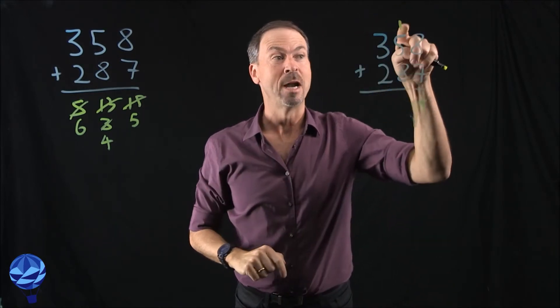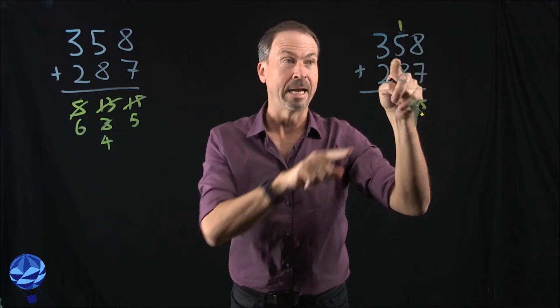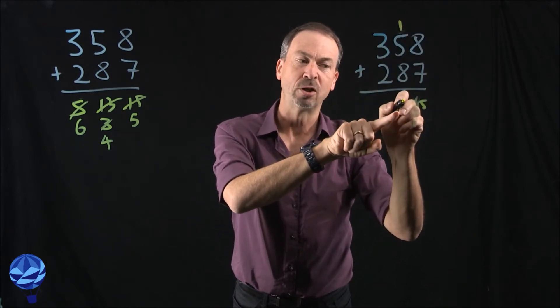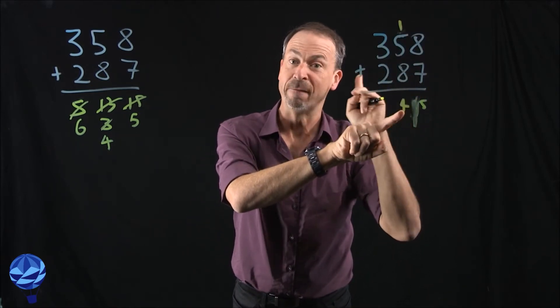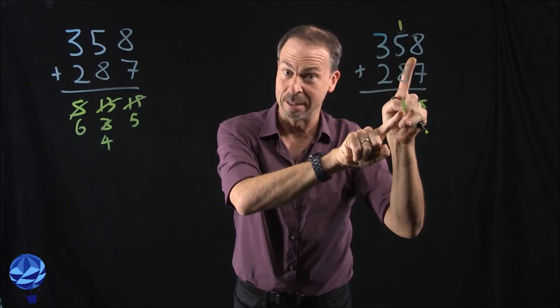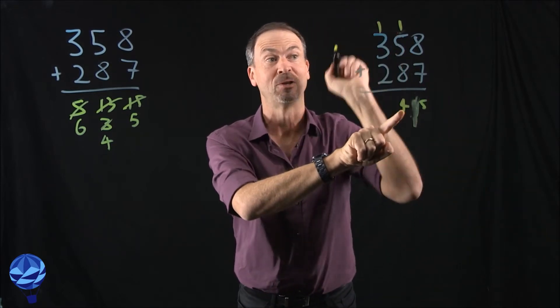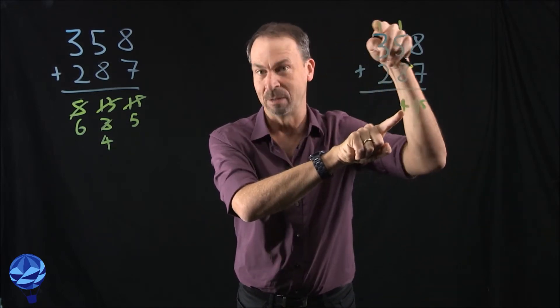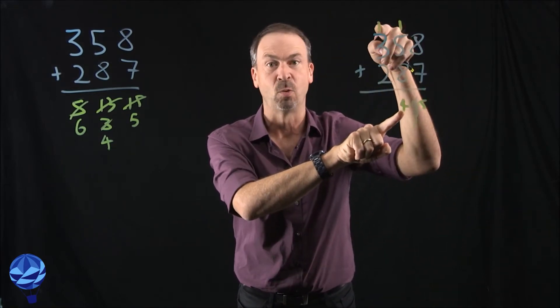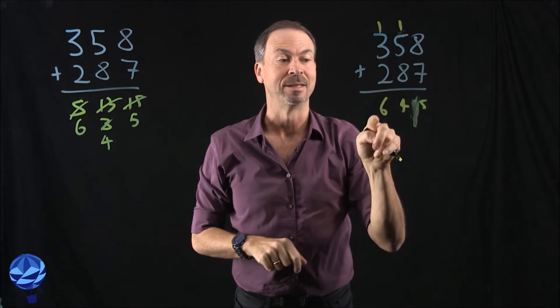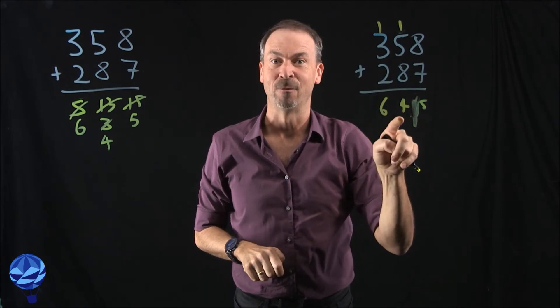Then you go 1 plus 5 plus 8 is 14. You don't write 14. You'll just write 4 because you'll do an explosion knowing 4 will be left behind, but the extra 10 will explode to make an extra dot there, which the algorithm makes you write as a 1. Now get 600s — 645.